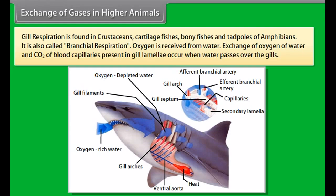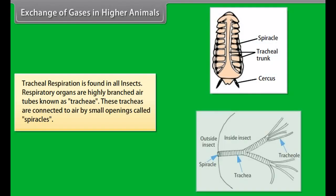Exchange of gases in higher animals may be through skin, gills, trachea, or lungs. Skin respiration is found in annelids and amphibians — exchange of gases occurs through skin which is thin, moist, vascular, and permeable. It is also called cutaneous respiration.